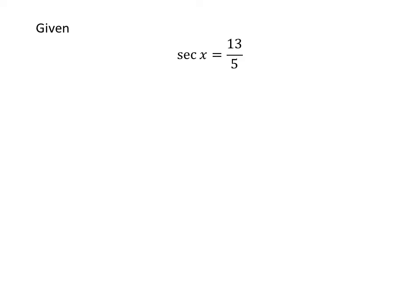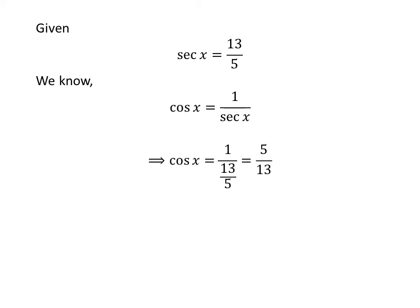We are given that secant of x is equal to 13 upon 5 and x lies in the 4th quadrant. We know 1 upon secant of x is equal to cosine of x. So cosine of x is equal to 1 upon 13 upon 5, which is equal to 5 upon 13.